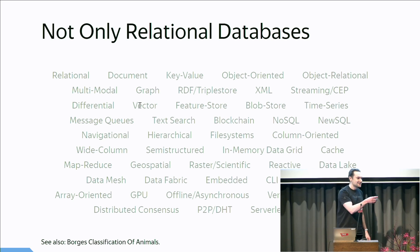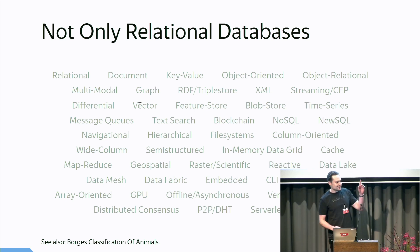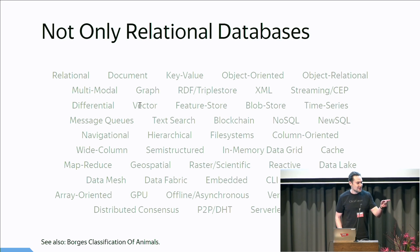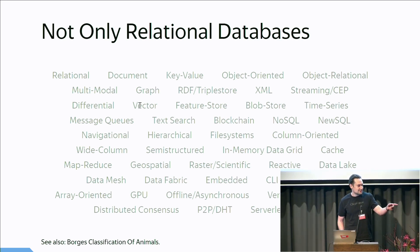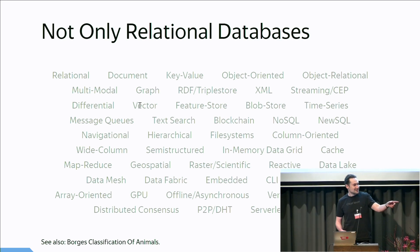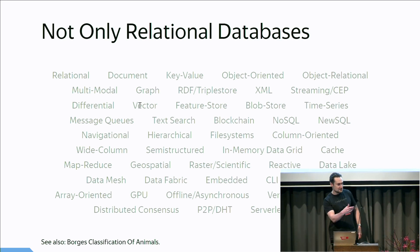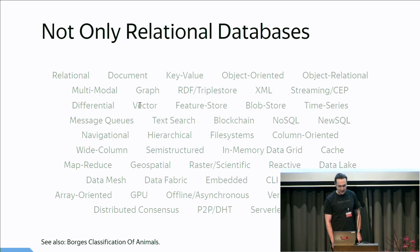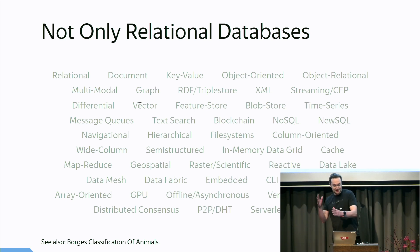A single person in this room actually knows what in-memory data grids are — Apache Ignite, exactly. But the question is: what did I forget? What is missing from the list? There is no NewSQL in the list — there is also NewSQL and all other kinds of SQL.